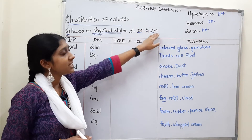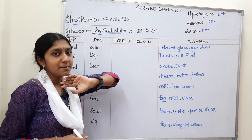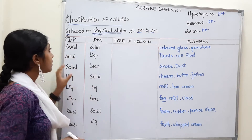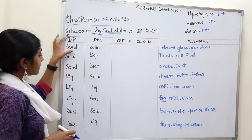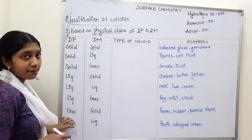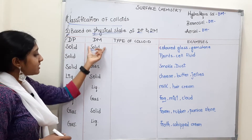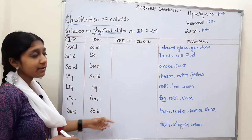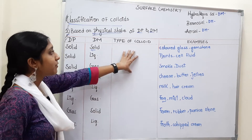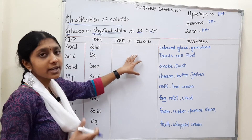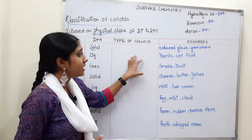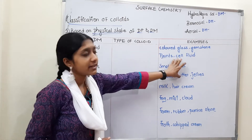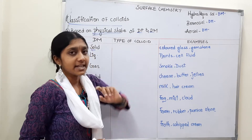The table has four columns: dispersed phase, dispersion medium, type of colloid, and examples.